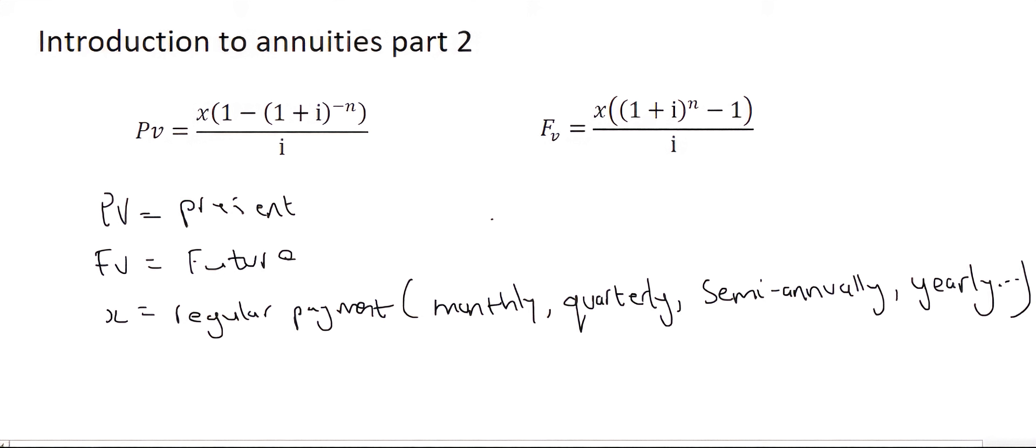But the most common ones that you'll be tested on would be your monthly, quarterly, semi-annually, and yearly, with monthly being the most popular one. Then i is your interest rate. N is going to be your number of payments. And that's it.